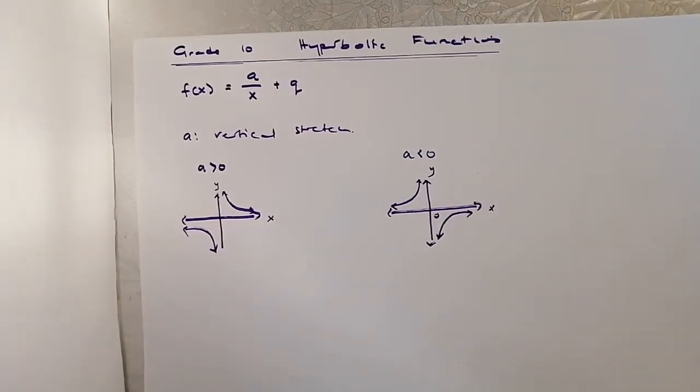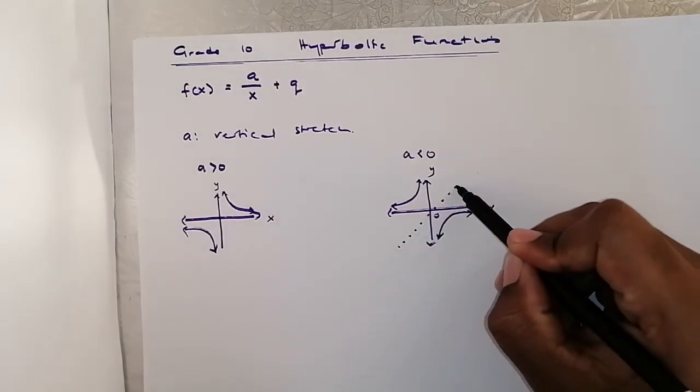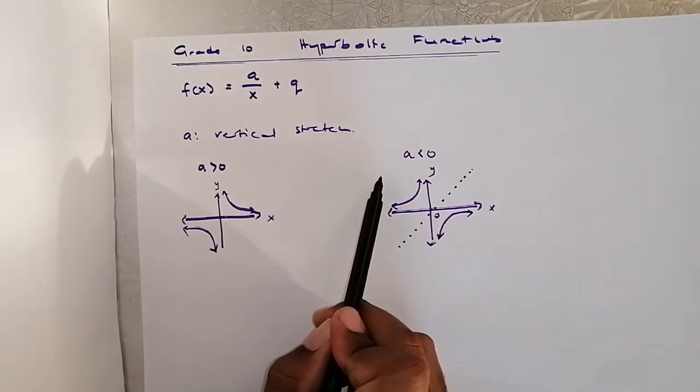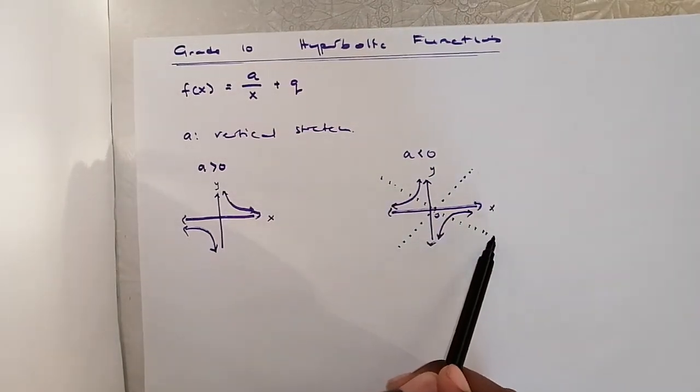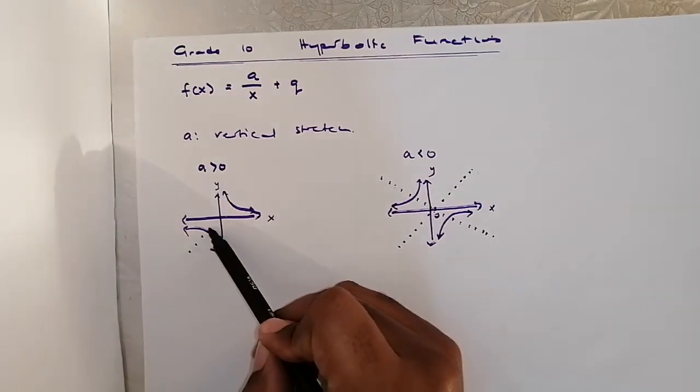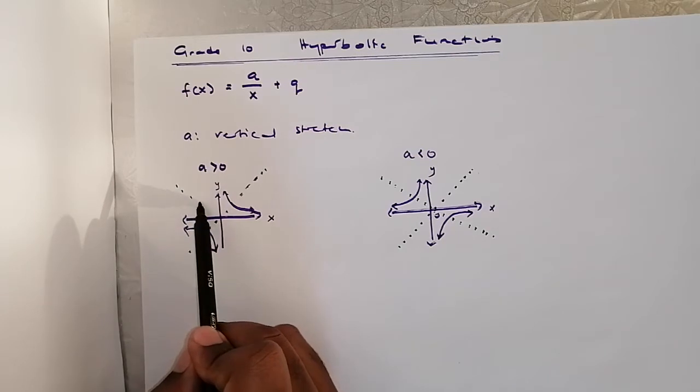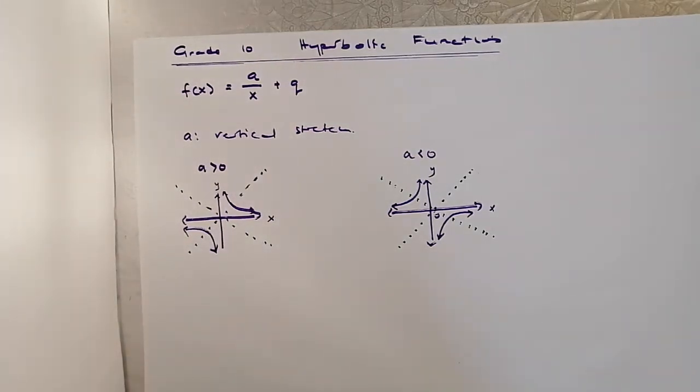I want us to appreciate something about hyperbolic graphs. They are symmetrical. These two wings are symmetrical about this line and this line, the axis of symmetry. And these lines have equations, y equals mx plus c.